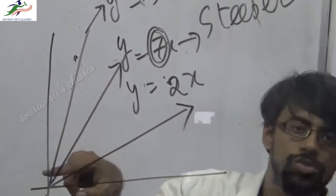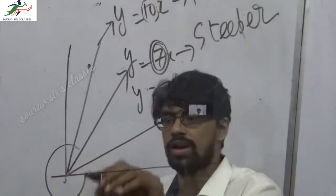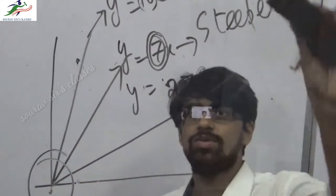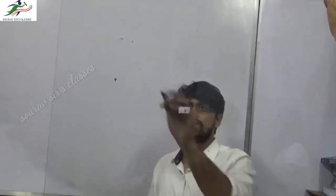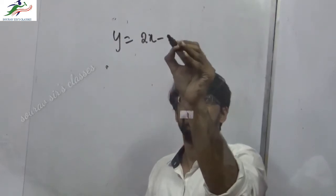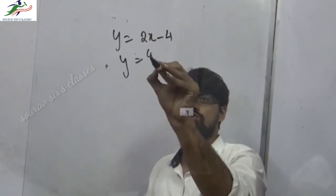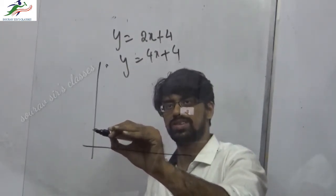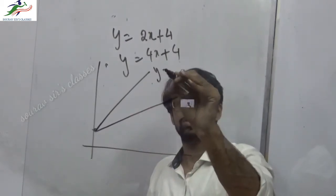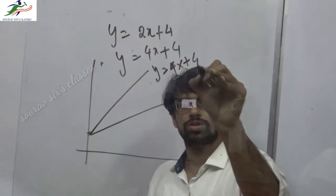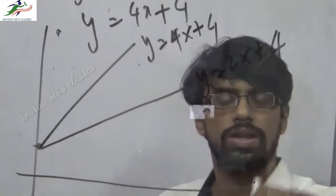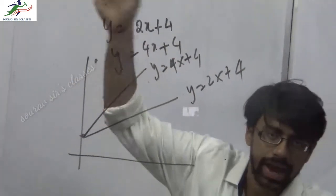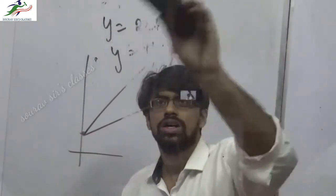In those examples I had set the intercept to 0, so each graph passes through the origin. Now if I take a more complete example: y equals 2x plus 4 versus y equals 4x plus 4. Both share the same intercept of plus 4, so both start at the same point, but y equals 4x plus 4 is steeper while y equals 2x plus 4 is flatter. That's the full picture for linear graphs.